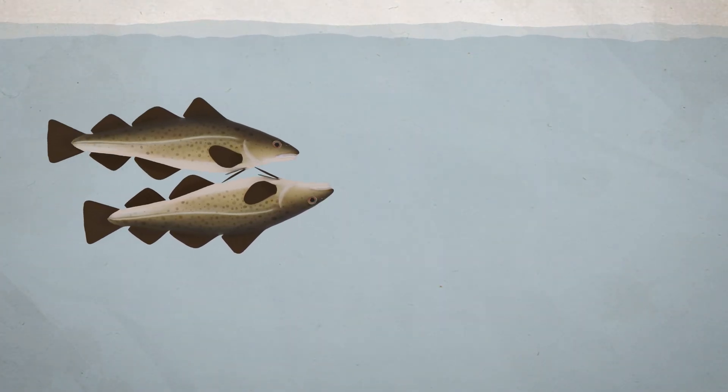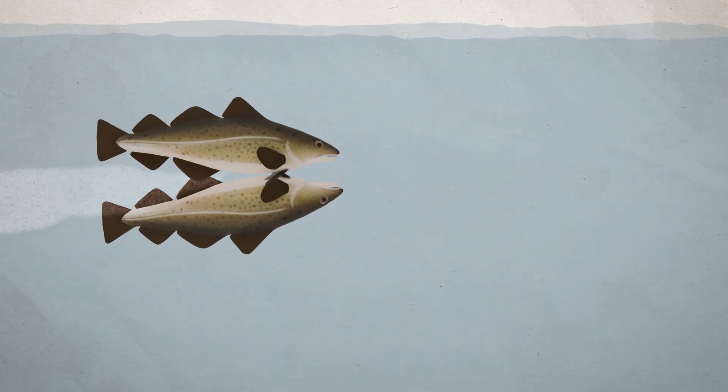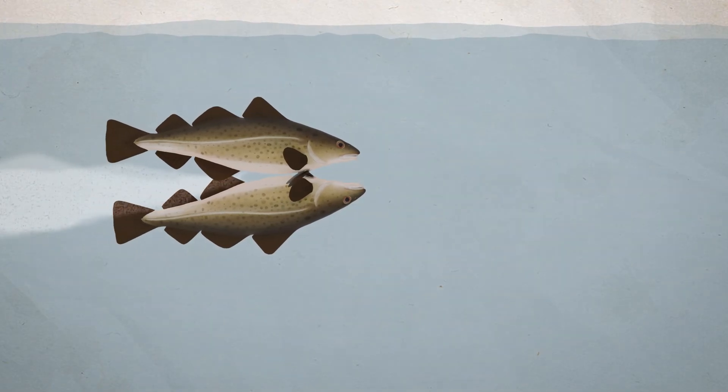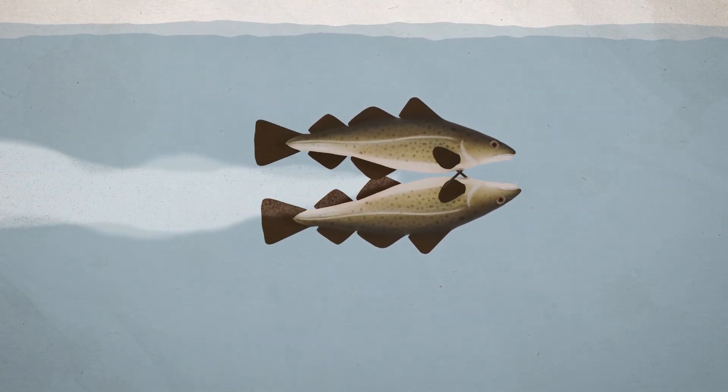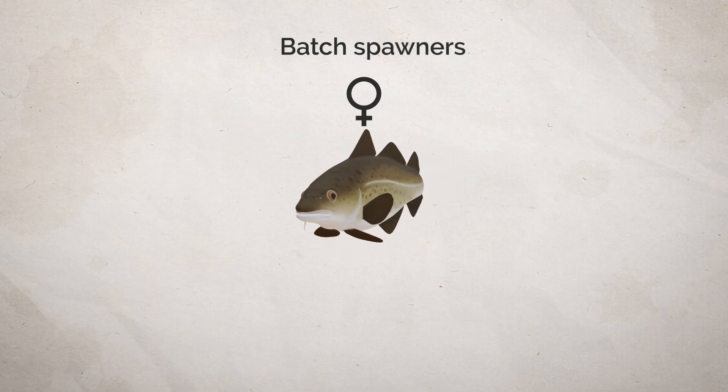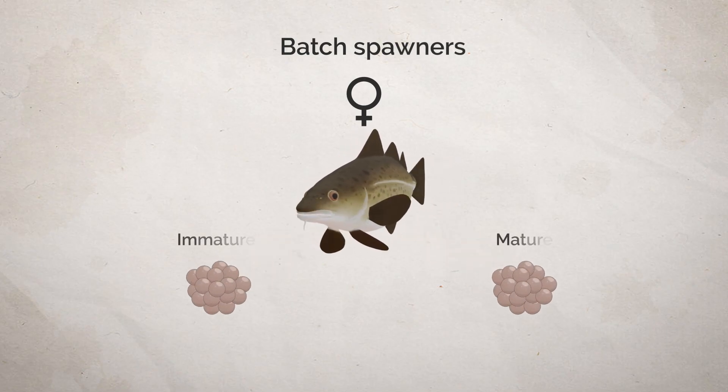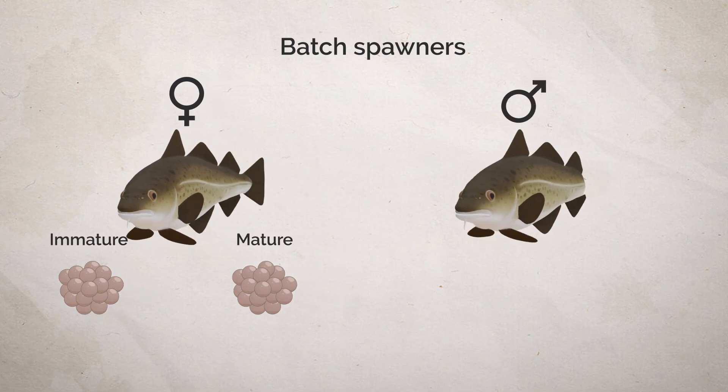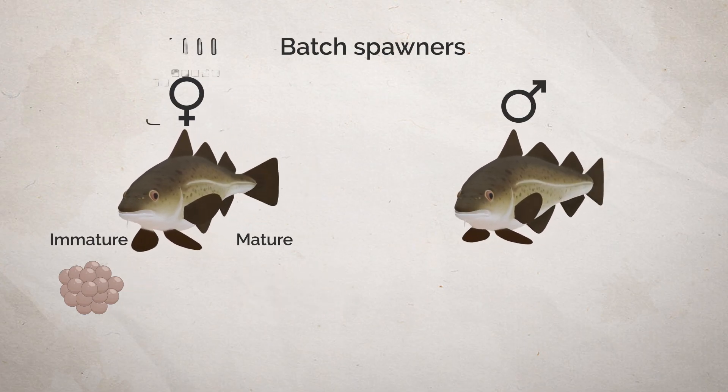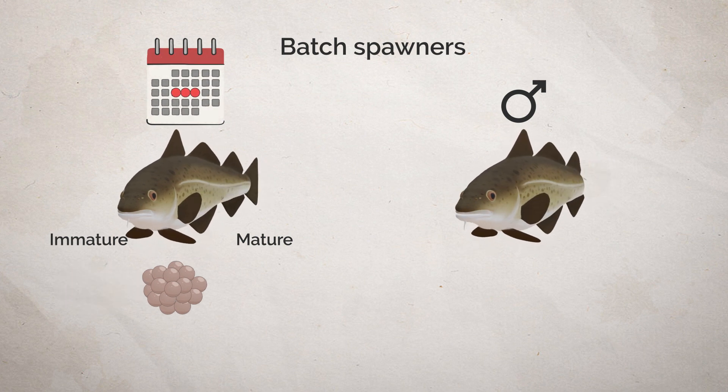Spawning takes place when a male and a female swim with their bellies towards each other, while the eggs and milt are sprayed out and are mixed together by the powerful blows the fish makes with its tail. Cod are batch spawners, which means that parts of the roe mature at a time. While the male is mature from the start and ready to spawn throughout the period, the female needs a few days before the next round of eggs is ready.